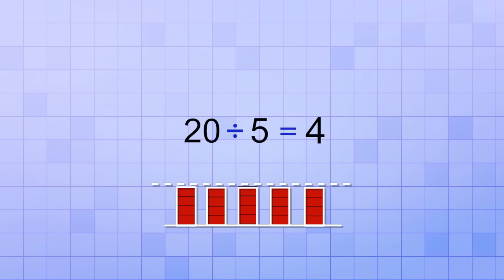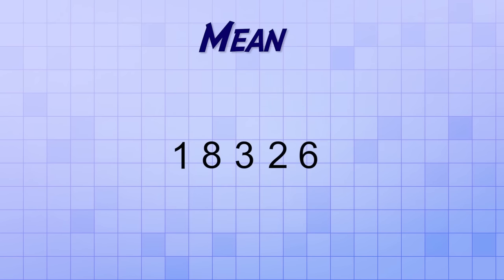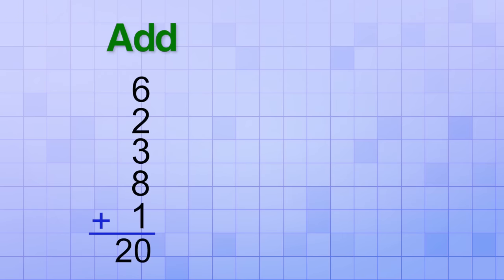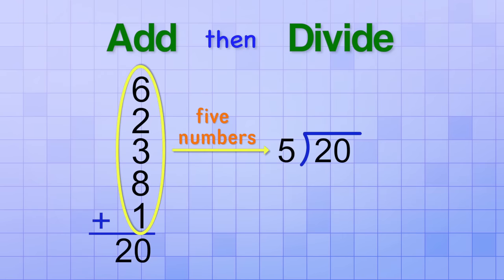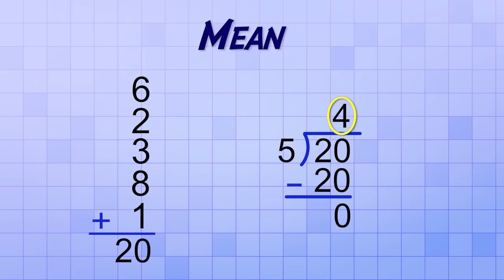So that's the math procedure you use to find the mean of a dataset. It's just two simple steps. First, you add up all the numbers in the set, and then you divide the total you get by how many numbers you added up. The answer you get is the mean of the dataset.